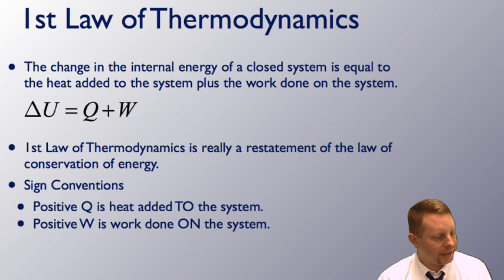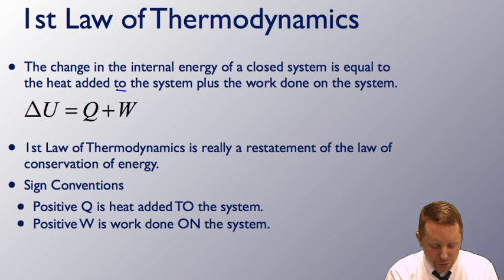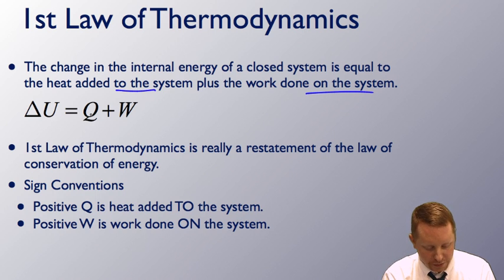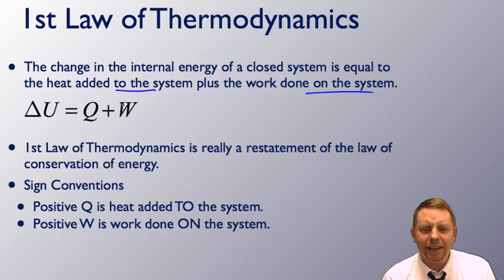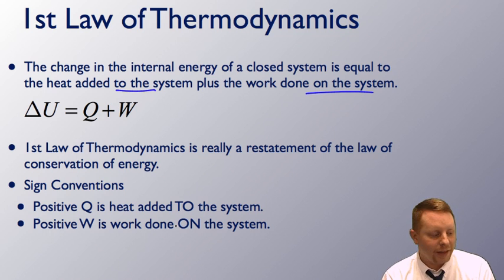The first law of thermodynamics says the change in internal energy of a closed system is equal to the heat added to the system plus the work done on the system. Or delta U equals Q plus W, where positive Q is heat added to the system and positive W is work done on the system. This is really a restatement of the law of conservation of energy. If energy were being pulled from the system — heat taken from it or work done by it — those quantities would be negative.